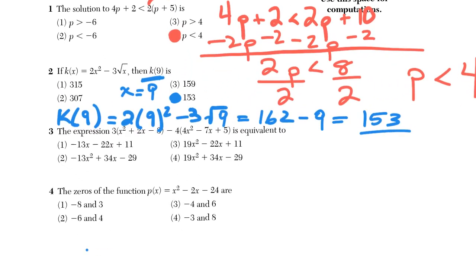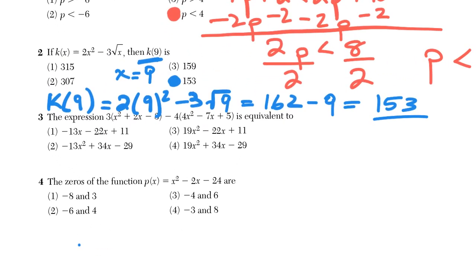For question 3, we have basically a polynomial question. If you want to give this a topic name, this is going to be distributing and combining like terms. After distributing, we get 3x squared plus 6x minus 9.